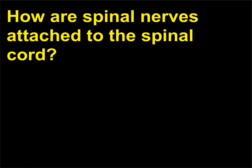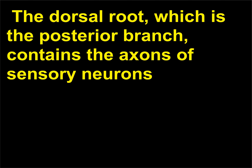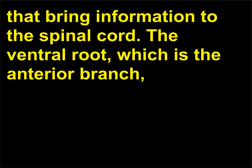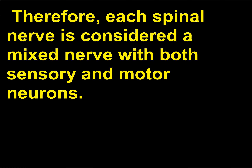How are spinal nerves attached to the spinal cord? Spinal nerves divide in the vertebral canal into two branches: the dorsal root and the ventral root. The dorsal root, which is the posterior branch, contains the axons of sensory neurons that bring information to the spinal cord. The ventral root, which is the anterior branch, contains the axons of motor neurons that carry commands to muscles or glands. Therefore, each spinal nerve is considered a mixed nerve with both sensory and motor neurons.